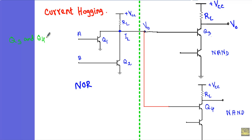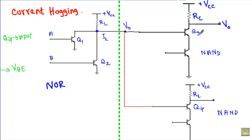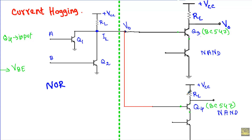Current hogging in the circuit will occur because transistors Q3 and Q4 cannot have similar input characteristics — that is, similar IB-VBE characteristics. This is because logic gates are manufactured at different temperatures, and transistors from the same logic family don't have identical doping profiles. Even if Q3 and Q4 are both BC547 transistors, they cannot have the same base-emitter junction potential.